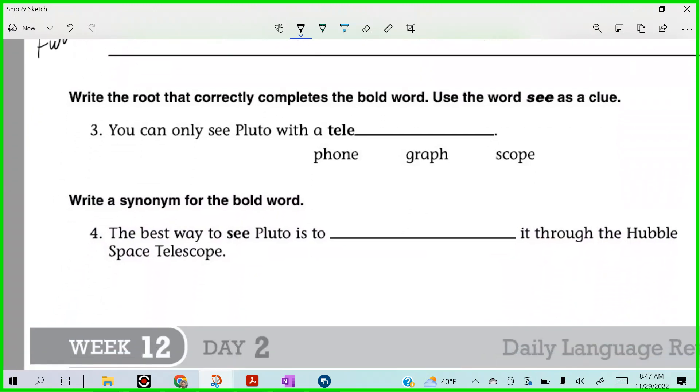Alright, take a look at this one. It says, write the root that correctly completes the bold word. Use the word see as a clue. See as a clue, right here. Not sea as in the ocean, but see as in you see something. You can only see Pluto with a... Now, which one should it be? Phone, graph, or scope? Graph means to write. Phone means to hear. Scope means to see. Latin, right? So what do you think? Right here. Telescope. Very good.